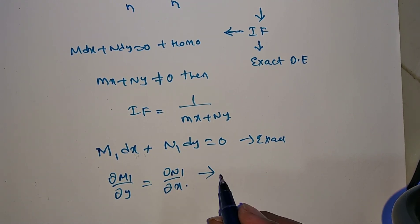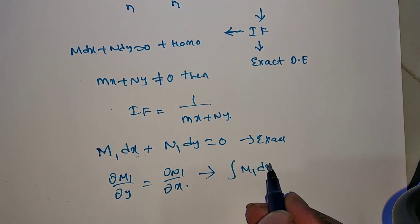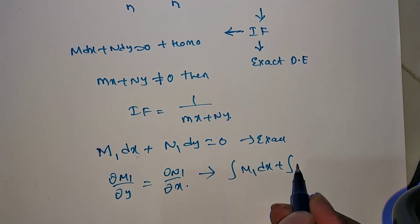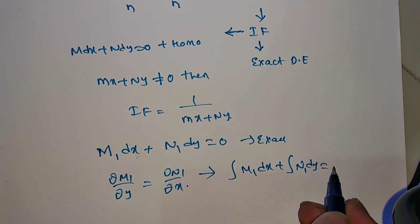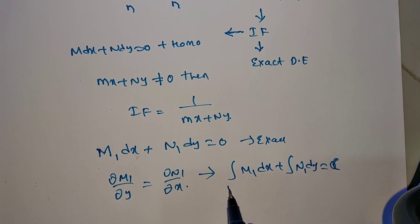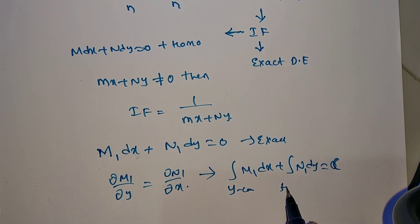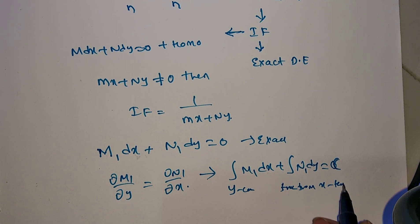The general solution for this exact differential equation is: integral of M1 dx plus integral of N1 dy = c, where for the first integral y is treated as constant, and for the second integral we take terms in N1 that are free from x.